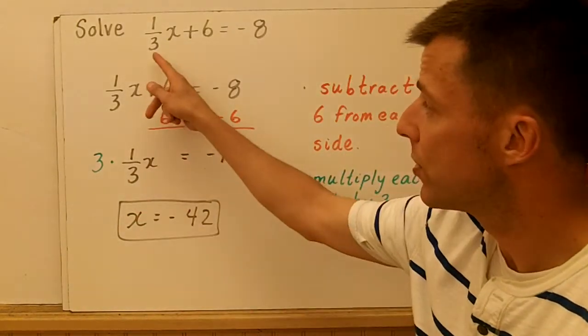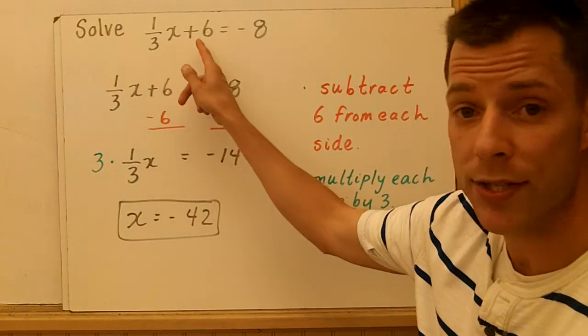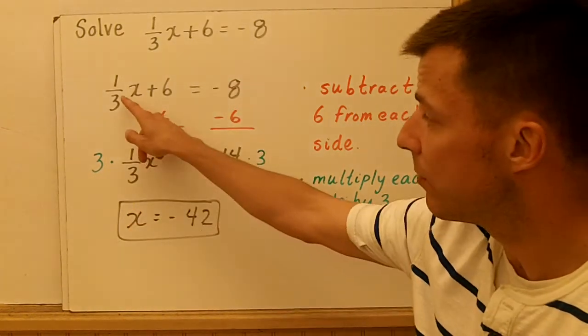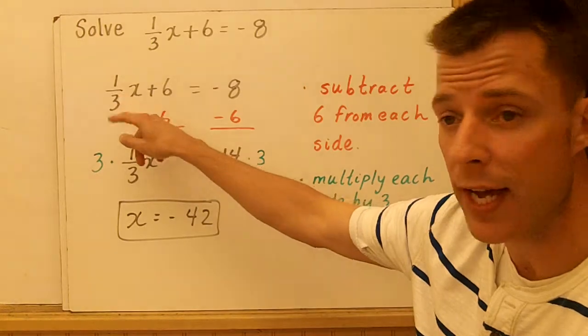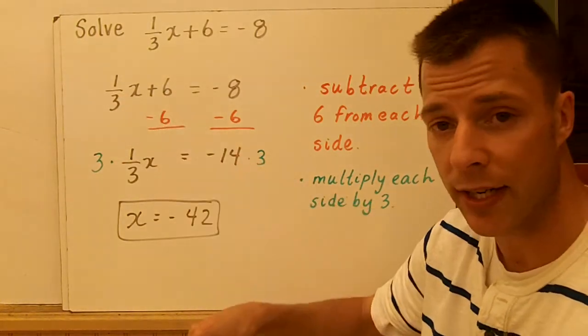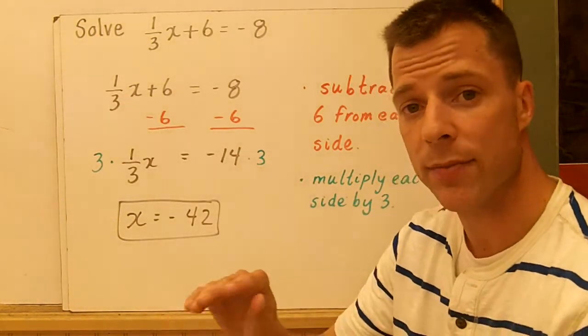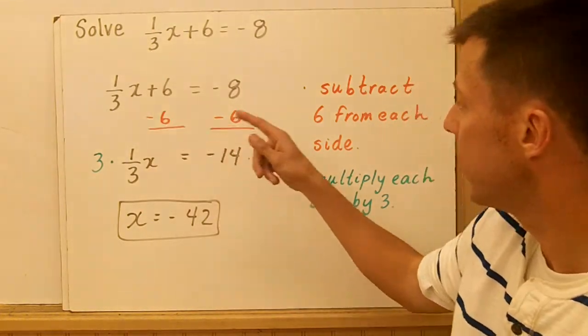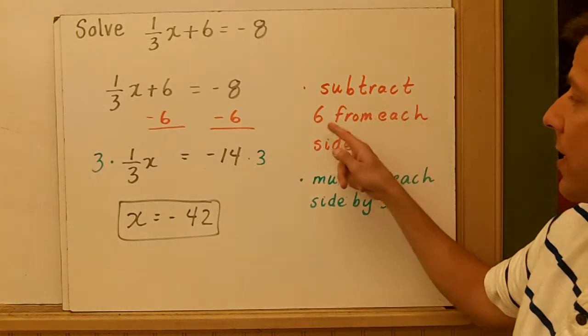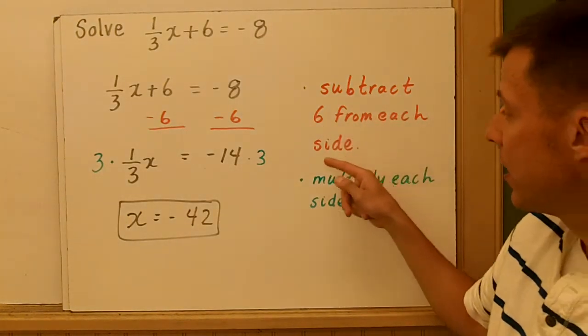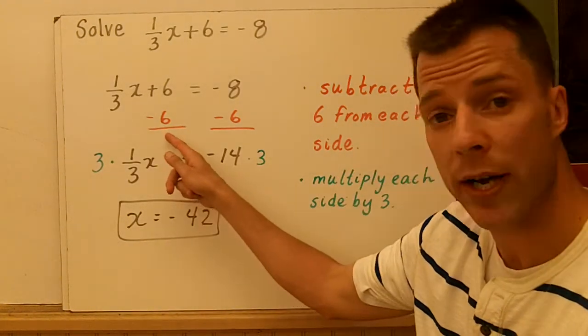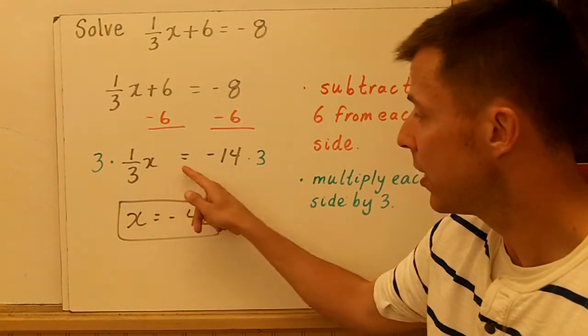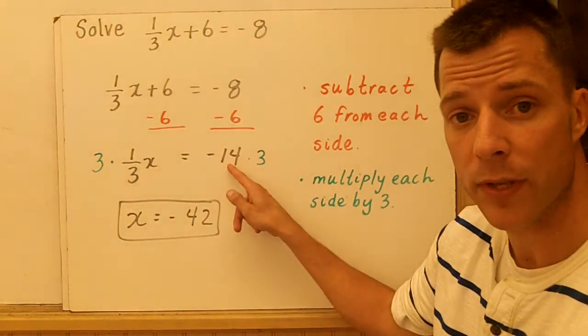All right, our first equation is we're going to solve 1/3 x plus 6 equals negative 8. So there's two operations I see: multiplication with the 1/3 and the x, and adding 6. With my advice, I'm going to multiply or divide last. I know it's addition, so I have to subtract 6 from both sides first. I subtract 6,